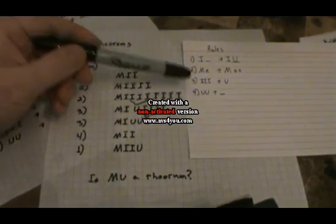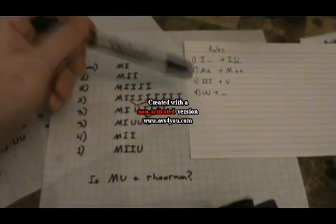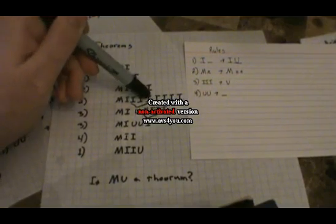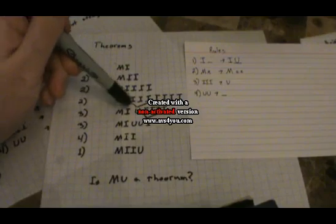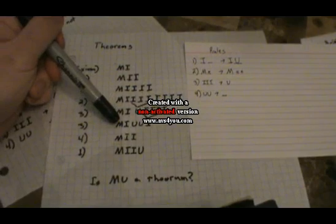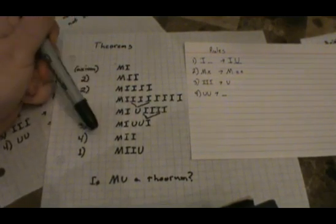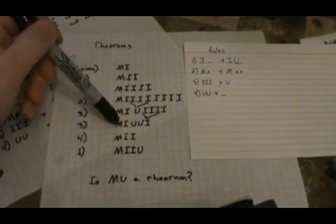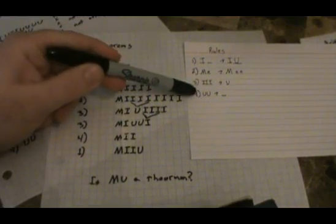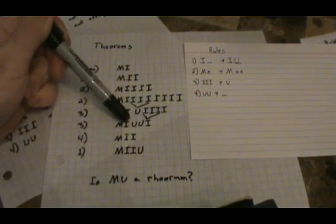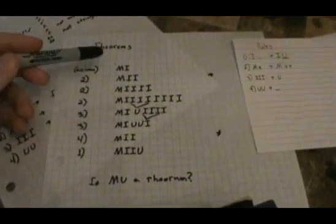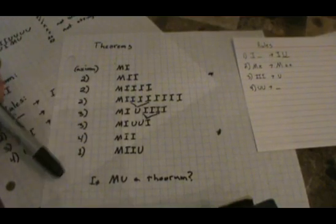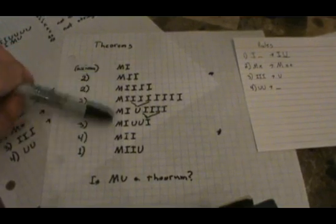Now that we've expanded it, let's start making it smaller again. Rule three takes three characters and turns them into one, so that makes things shorter. Since we have a whole bunch of I's, let's take three of them and turn them into U — I chose these three right here. So using rule three, we now have MIU then four I's. Let's do the same thing again: we get M, the first I, the U we had before, three I's turned into another U, and one remaining I. Then with two U's in a row, rule four lets us remove them entirely, leaving us back close to where we started. There are a whole bunch of ways to make every theorem.